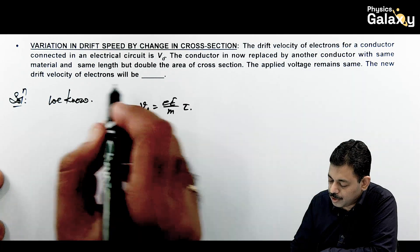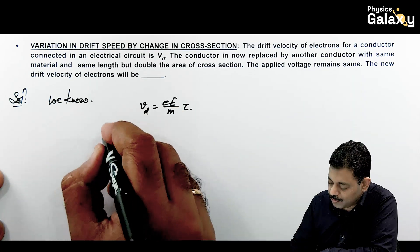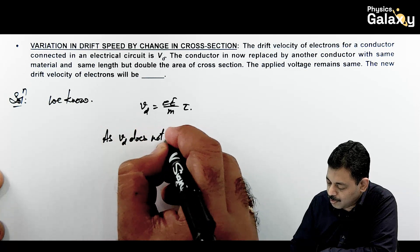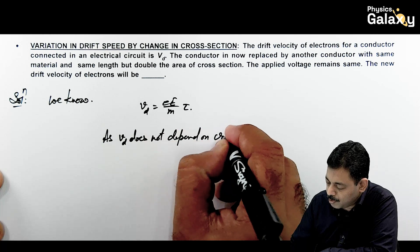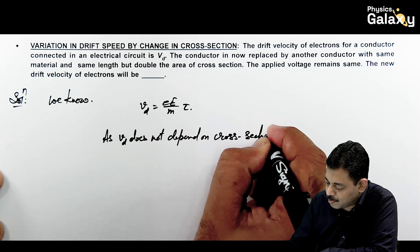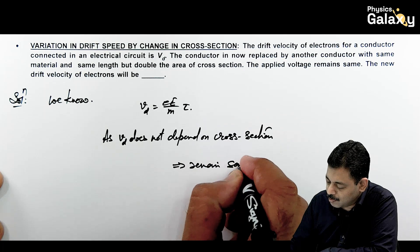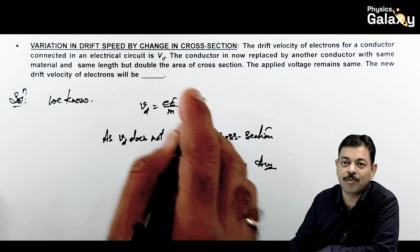So the new drift velocity - we can write Vd does not depend on cross section. Here we can write it will remain same. That is the answer to this problem. It won't be changed.